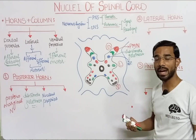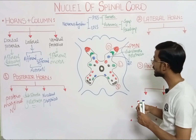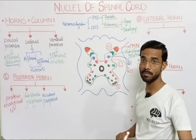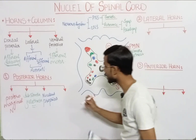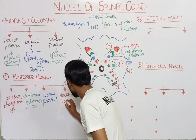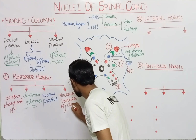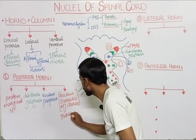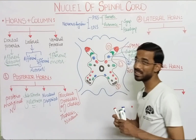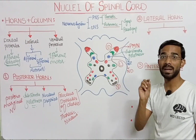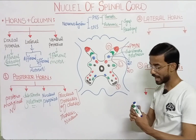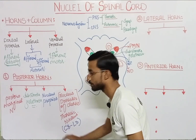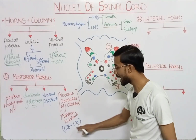The nucleus proprius is present all over the spinal cord. The last nucleus in the posterior horn is called the nucleus dorsalis of Clark, also known as the thoracic nucleus. There is a difference, however, because this nucleus is specifically present in a specific part of the spinal cord — from the C8 segment to the L3 segment.